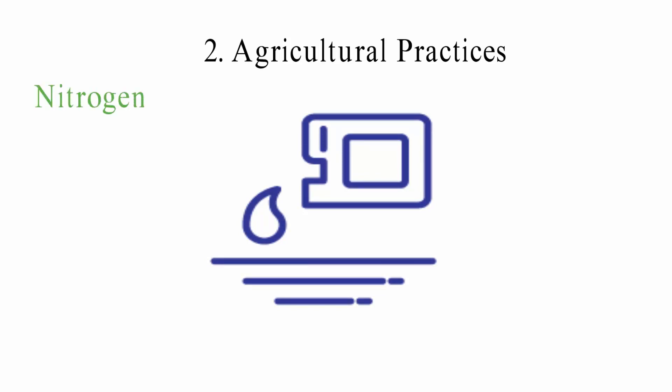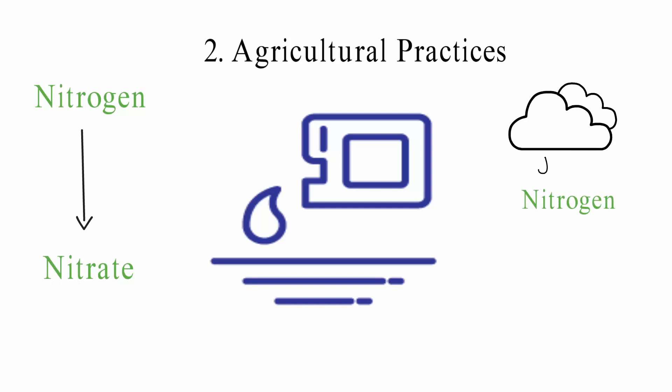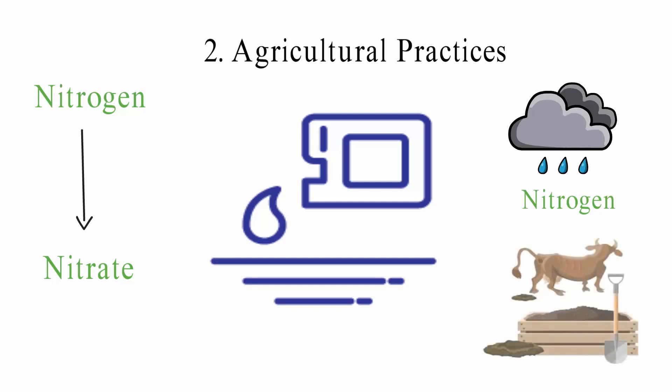Agricultural practices: Most of the world's nutrient pollution comes from the use of chemical fertilizers. Nitrogen, in the form of nitrate, can be used on farms to help crops grow. Too much nitrogen could be washed away by heavy rains and end up in the water. Rivers and lakes near farms are the worst hit. Animal manure also contains both phosphorus and nitrogen, and pollution of water bodies can happen if animal waste isn't properly taken care of.